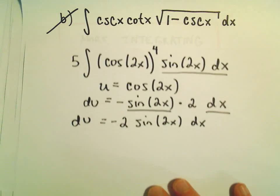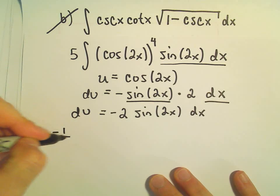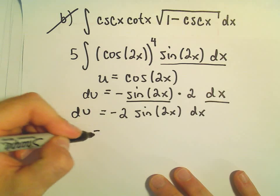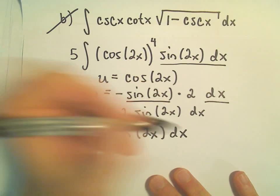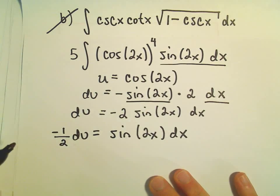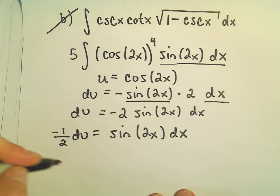Well, to get rid of the negative 2, I can just multiply both sides by negative 1 half. So it says negative 1 half du will be the same thing as sine 2x dx. And now I think we're in a position where we can just use our substitution.